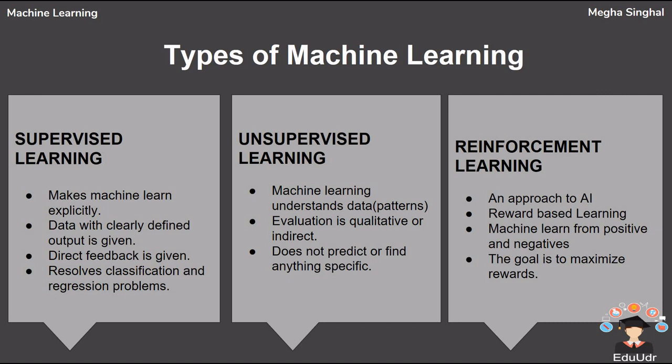There are three types of machine learning: supervised learning, unsupervised learning, and reinforcement learning. Supervised learning is the technique of accomplishing a task by providing the training input and output patterns to the system. Unsupervised learning is a self-learning technique in which the system discovers features of the input population on its own, and no prior set of categories are used. Reinforcement learning is a reward-based learning.